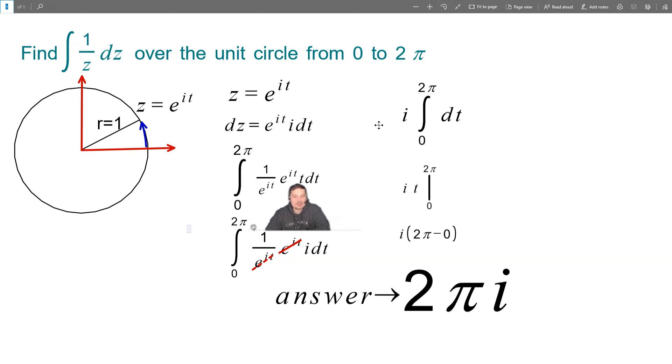All right, so now what I can do is observe that e to the i t and e to the i t are present. One is in the top and one is in the bottom of a fraction. So what I can do at this step is I just cancel them off. So e to the i t here cancels with the e to the i t in the bottom. 0 to 2 pi is kept, the 1 is kept, the i is kept and the dt is kept.